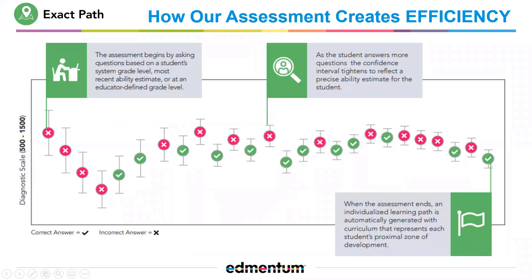We know that students can be measured accurately via the method by which the computer adaptive test works. It starts with the information it has about the student. If the student has never taken the Admentum diagnostic before, all we really know is their grade level. So it uses that grade level information, asks students questions, and then automatically adjusts from question to question based on how the student answers. If the student gets questions wrong, it levels down; as the student gets questions correct, it levels up. It uses a precision algorithm to determine when to exit the student from the test, and this is really a piece of efficiency.